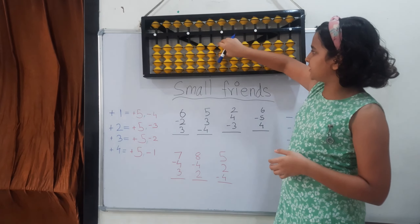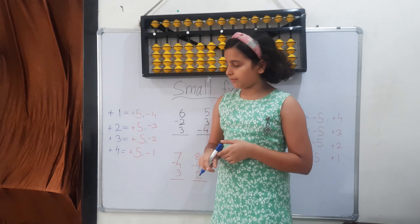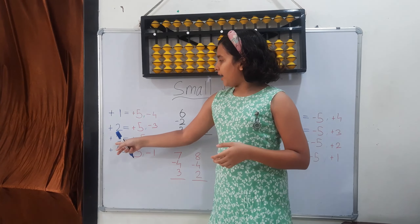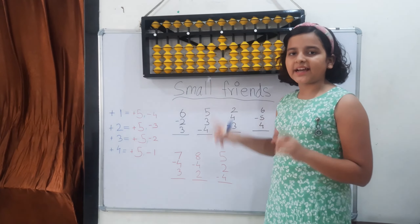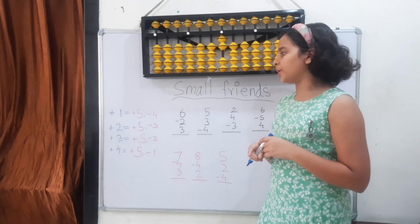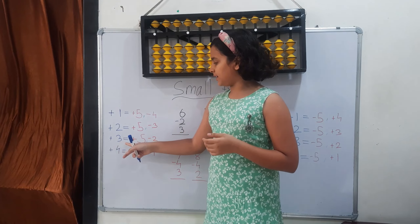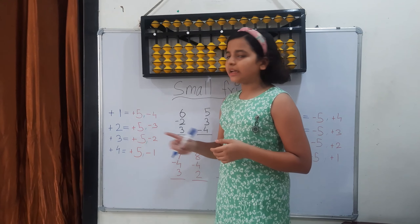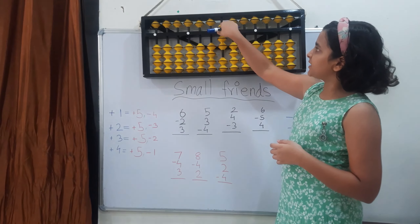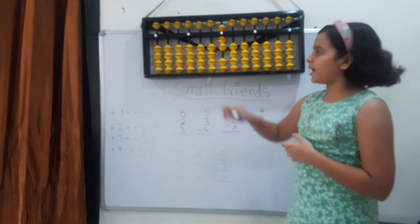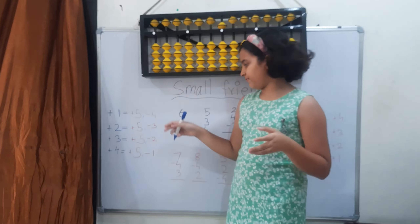Now plus 3. I have to add 3 but I have only 2 bits — I'm 1 bit short. So plus 3 equals plus the 5 minus the 2. We plus the 5 and minus the 2, and the answer is 5.